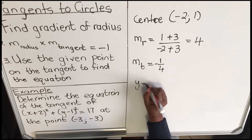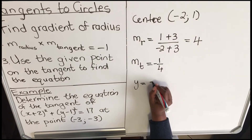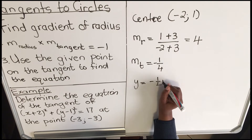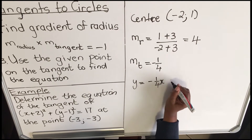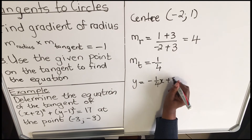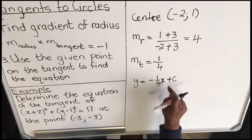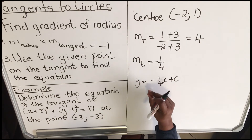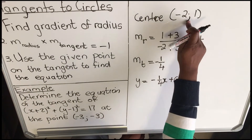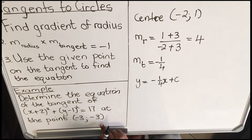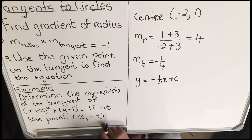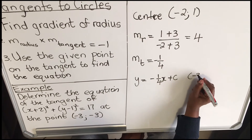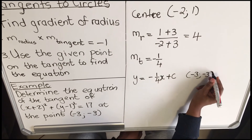Now put it into the equation y = mx + c. My gradient is −1/4. I must calculate for c. Now, most of the time students make a mistake here — they use the point at the center. You need to use the point on the tangent, so I'm going to use (−3, −3).